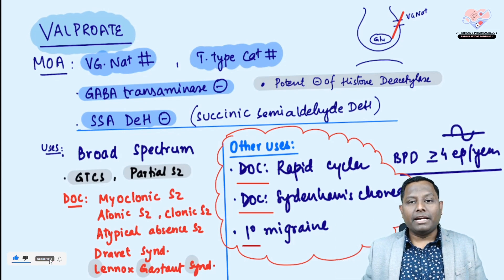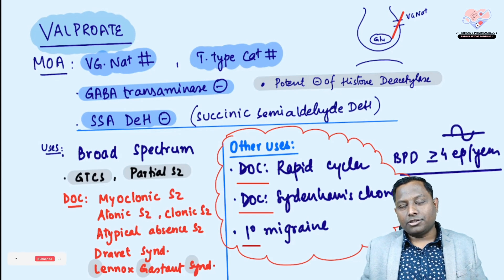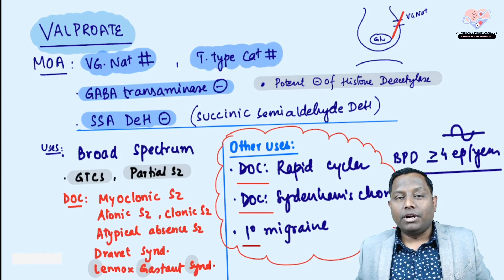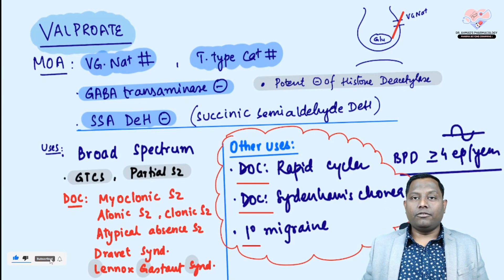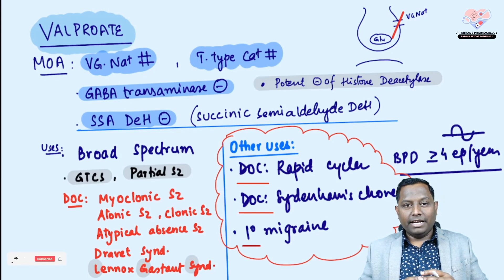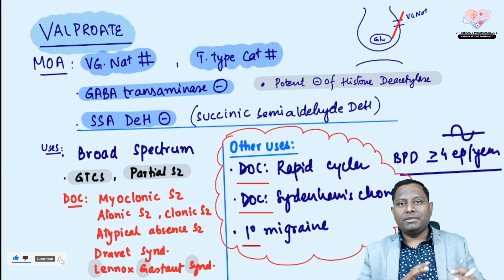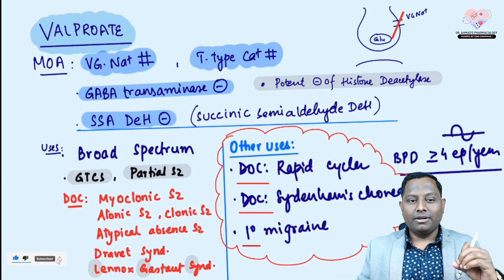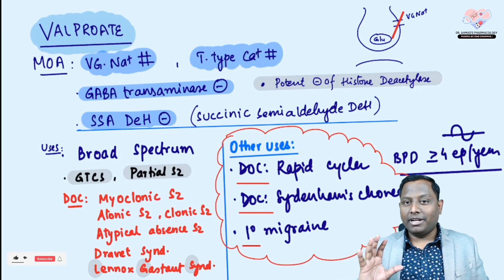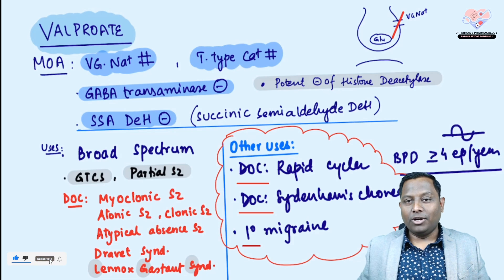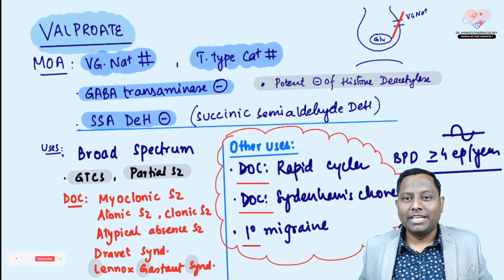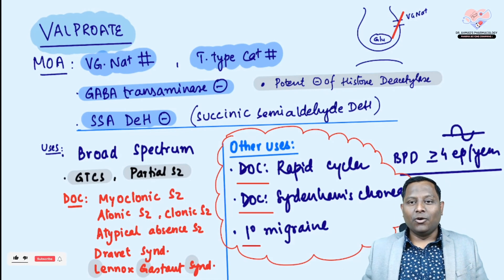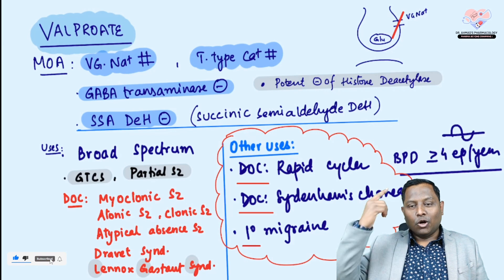Like a grandfather who is involved not just in family matters but also in extra-familial social work, valproate is used in rapid cycling bipolar disorder, Sydenham's chorea, and migraine prophylaxis. The grandfather is in the age group of 50 to 100 — that is the therapeutic plasma concentration. The grandfather always stops and inhibits you — that represents valproate's enzyme inhibiting property. In the story, the grandfather in his youth took shots of alcohol, which damaged his liver and pancreas — representing hepatotoxicity and pancreatitis.